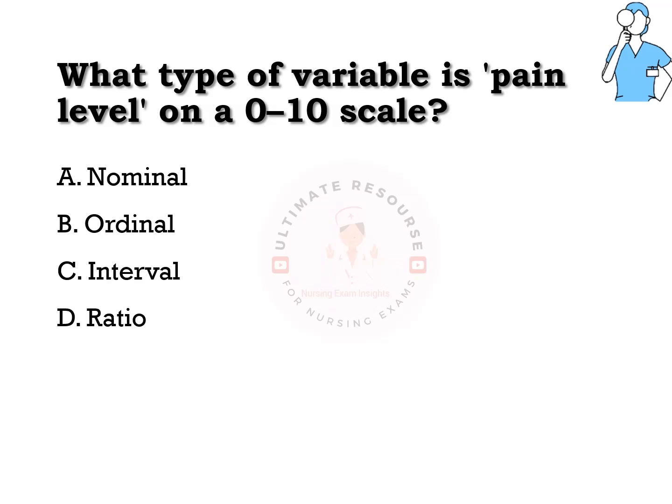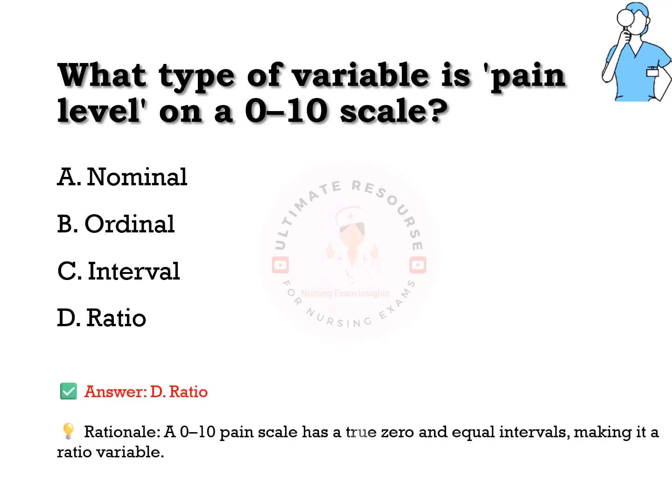What type of variable is pain level on a zero to ten scale? Options are a) nominal, b) ordinal, c) interval, d) ratio. The answer is d) ratio. A zero-to-ten pain scale has a true zero and equal intervals, making it a ratio variable.